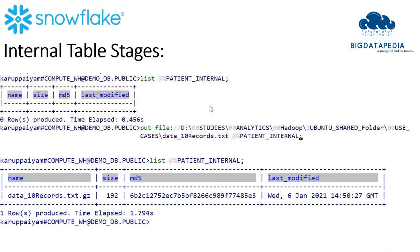Table stages are also similar to user stages. Whenever a table is created, a table stage is created for each table, and it is given by the Snowflake team. We cannot drop or delete anything in this. If you want to retrieve the table stages, you can use at-sign and percent symbol followed by the table name — for example: LIST @%patient_internal. If you execute it with no data, it shows as empty. Using the PUT command, I am directly inserting into this table stage, and then I can see the data is reflected.